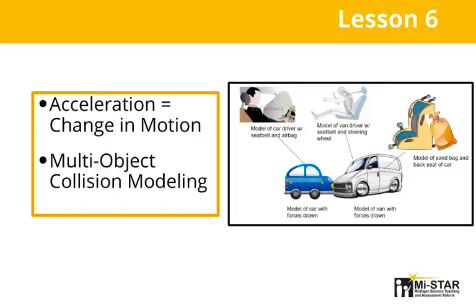Lesson six continues to examine collisions, this time with multiple objects. Students observe a controlled and safe collision involving two vehicles, two crash dummies, and a large bag of sand, working in groups to analyze the crash with each partner taking one component of the system. The lesson focuses on the difference between constant velocity and acceleration, or change in motion. Students write stories from the perspective of a specific object describing how it experiences the time just before and during the collision, identifying when, how, and why the object changes its motion. This change in motion is formally introduced as acceleration, and students see that an unbalanced force must be present for acceleration to occur. Students put their multi-object system models together and share in a consensus discussion about unbalanced forces and acceleration.